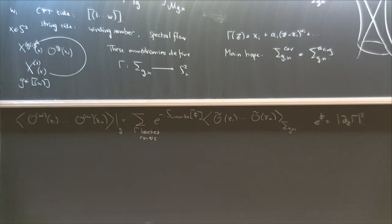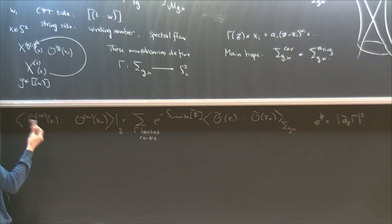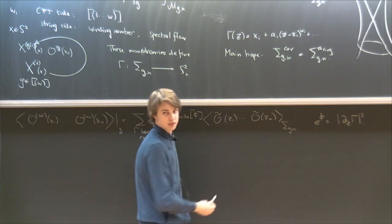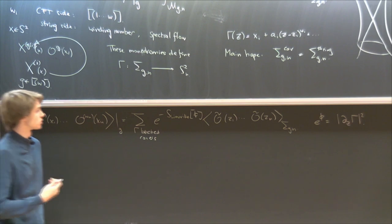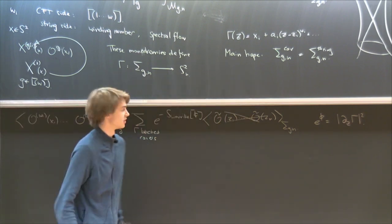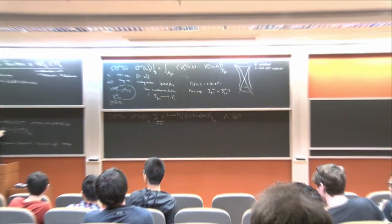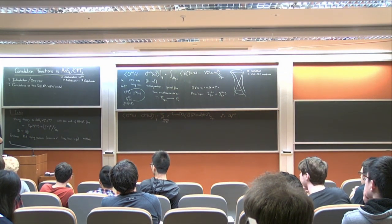I will mostly focus on the twisted sector ground states — the pure twist states. If I lift them to the covering space, they just become the identity field in the covering space, because they no longer implement twists. So I will mostly compute the partition function in the covering space. Excited states can always be reduced back to twisted sector ground states because there is a large enough symmetry algebra.